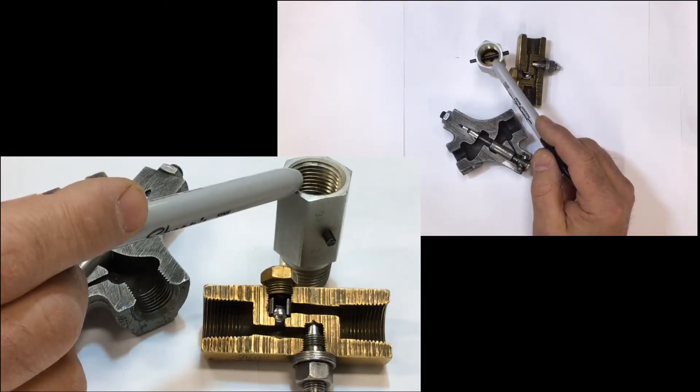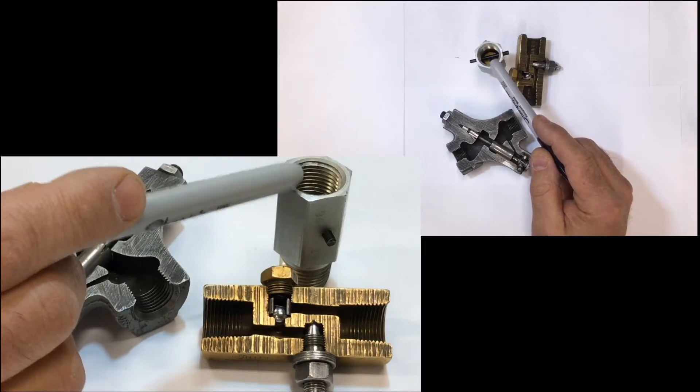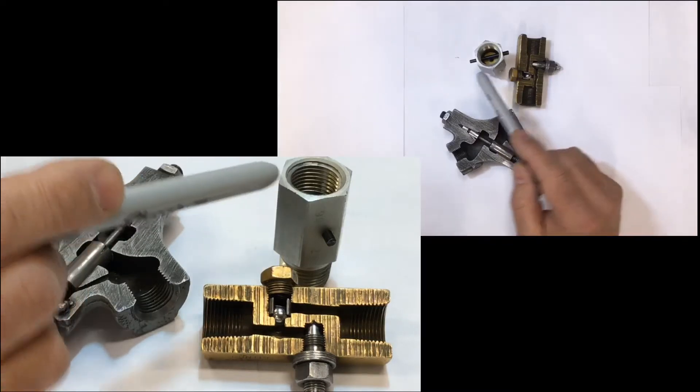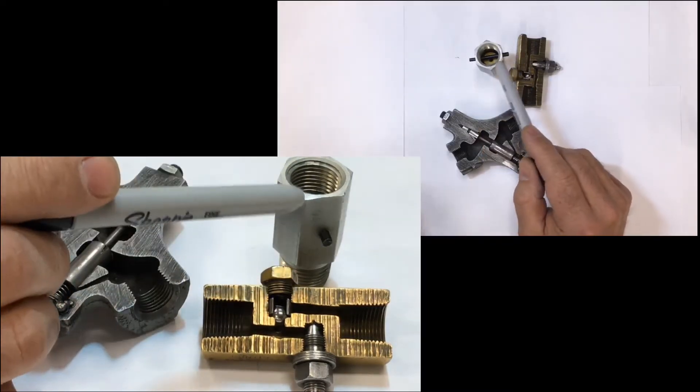This one here is a restrictor type, non-variable. Notice it's got a pin going right through holding the poppet.